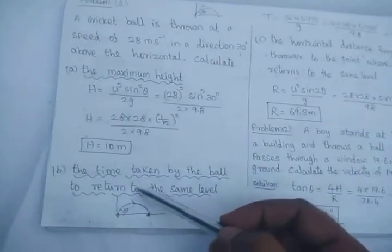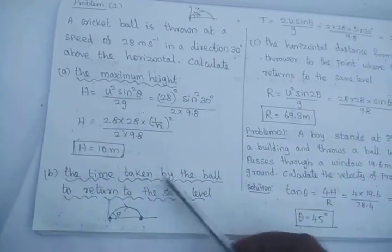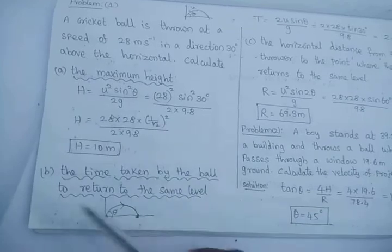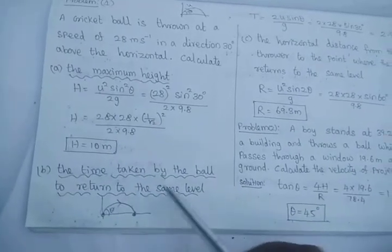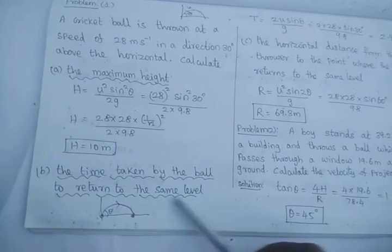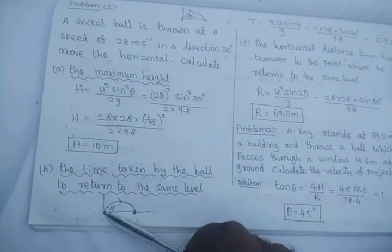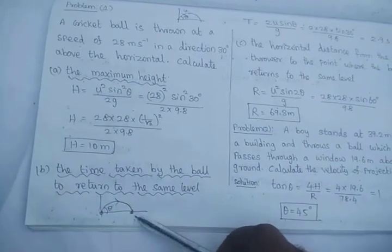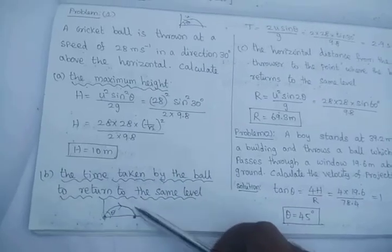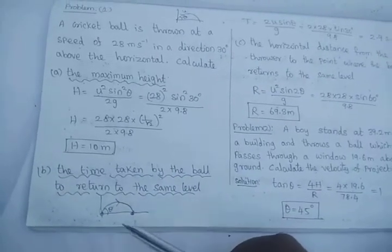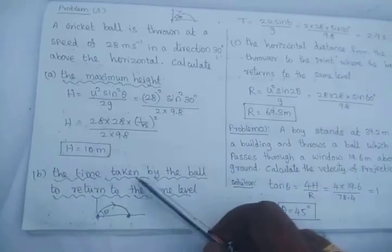They never directly give the time of flight. They say time taken by the ball to return to the same level — starting from the horizontal and ending at the horizontal. This is the time of flight. You have to understand the question clearly.